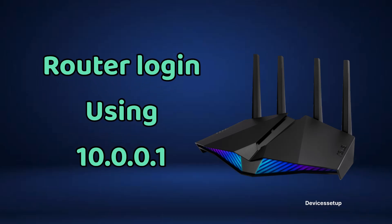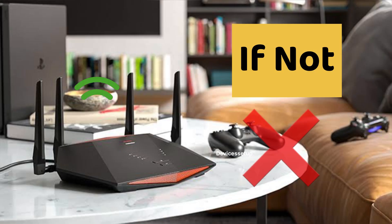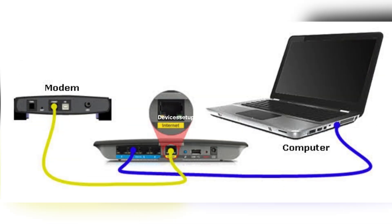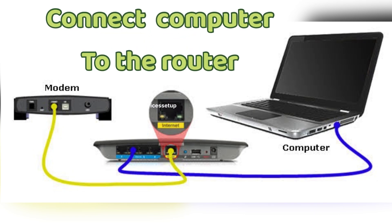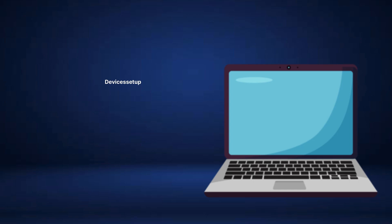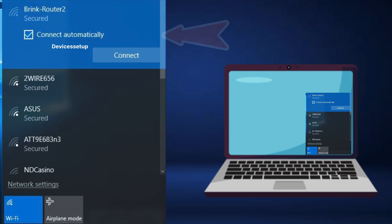To login to any router using the 10.0.0.1 IP address, first make sure your router is all set up. If not, connect the internet cable from your ISP or modem to the WAN port of the router. Then connect your computer to the router either via ethernet cable or wirelessly. For a wireless connection, open the Wi-Fi list on your computer or laptop and find your router's SSID showing up, then tap on it to connect.